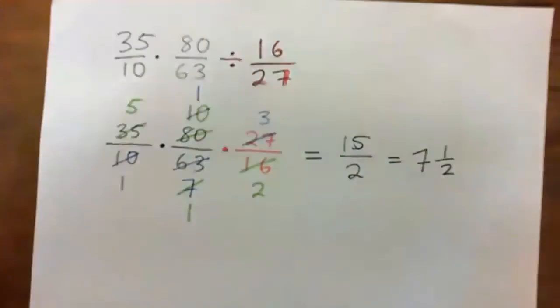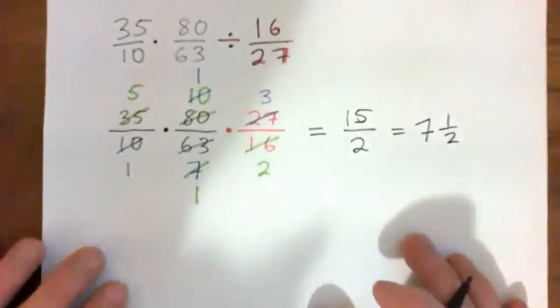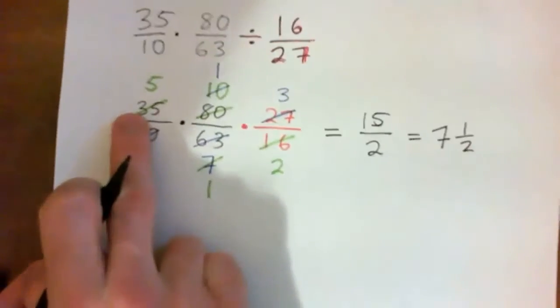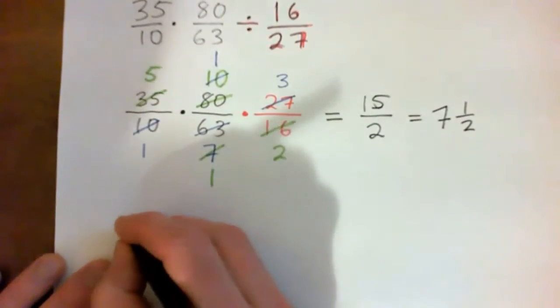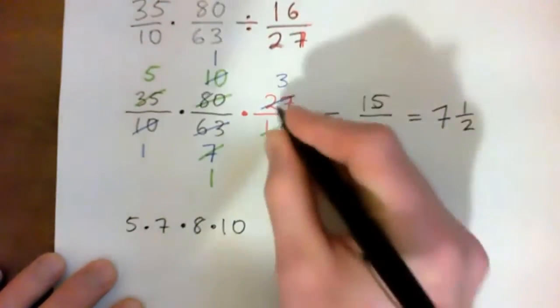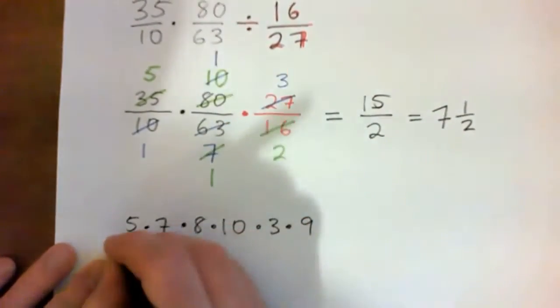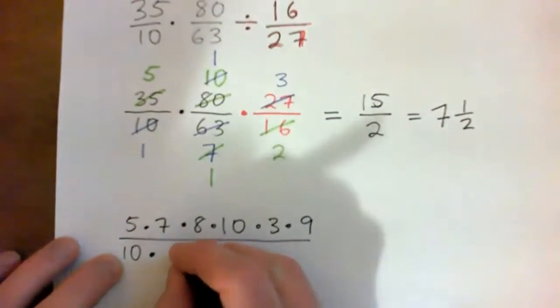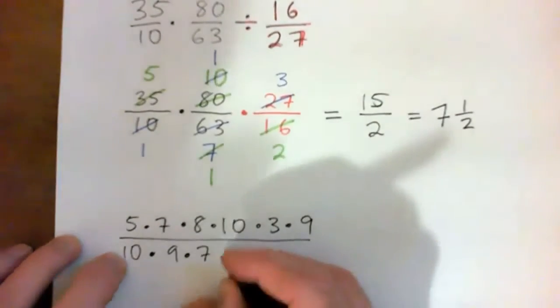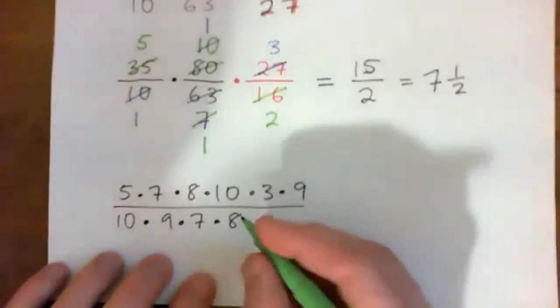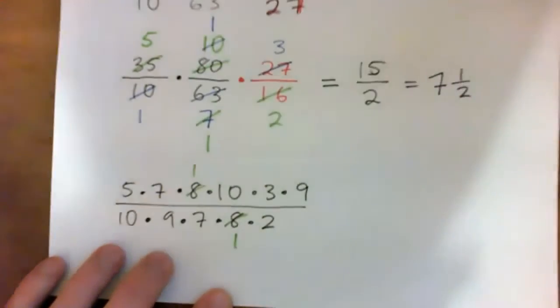And just for the purpose of this video, for anyone that's interested, there's other ways of doing this. Like, some students like to list pairs of factors. So for example, see how 35, you can write that as 5 times 7, and then 80 is like 8 times 10, and then 27 is like 3 times 9. You guys can do that too, if you want to. That's fine. And then we have like a 10 down here, and that would match with that 10. And then 63 is like 9 times 7, and 16 is 8 times 2. So if students want to do that, you guys are welcome. And this is just for the purpose of the video as well.